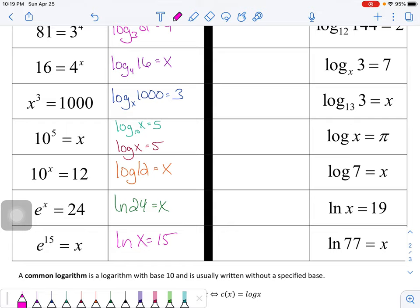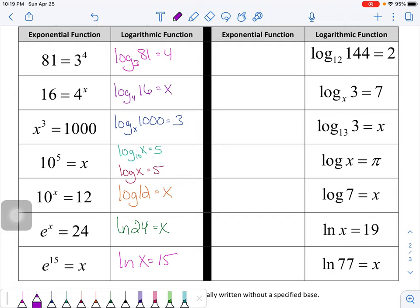Now that's converting from exponential to logarithmic. Let's convert from logarithmic back to exponential. So we've got our base of 12 power is two, and this is going equal to 144. So it's base power answer here and base power answers the argument.